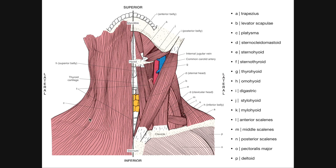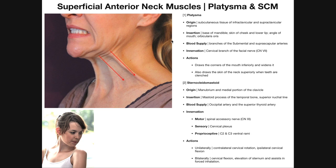Letter C is one of our superficial muscles. It's a broad sheet muscle that extends all the way up from the mandible, down past the clavicle, and it actually fuses with the superior part of the pectoralis major muscle. This muscle is called the platysma — it is one of the two muscles in the superficial layer of the anterior neck musculature.